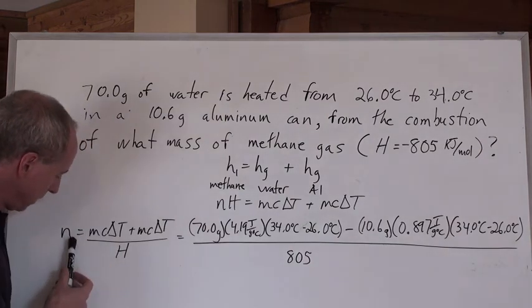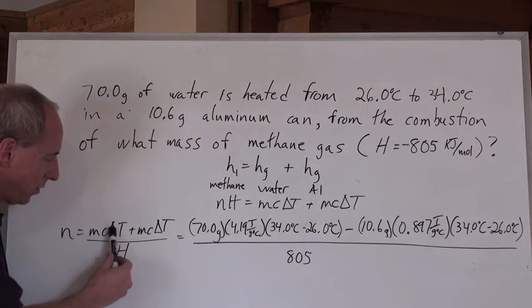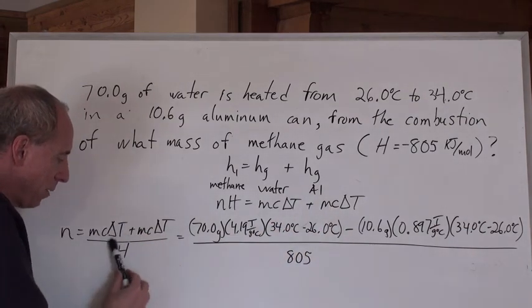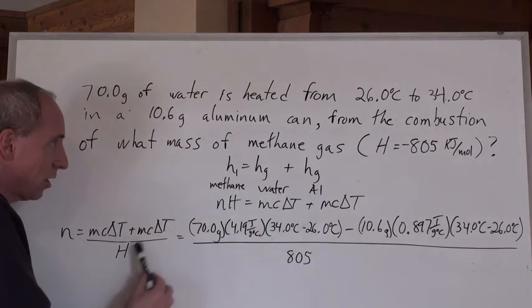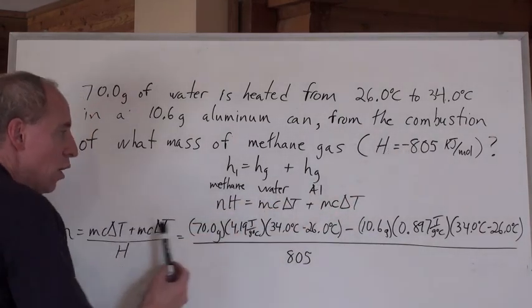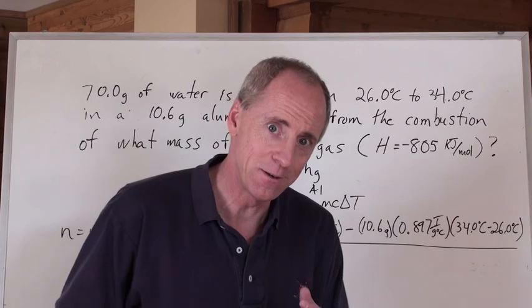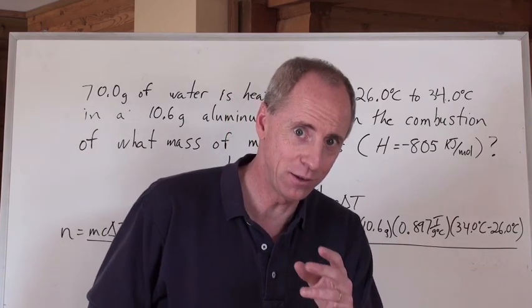Let's go from the beginning. n equals mc delta t plus mc delta t of the aluminum divided by the molar heat of combustion of that methane. When you plug all these numbers in, you're going to get the answer, sort of. Be careful, here it comes.